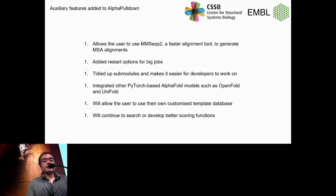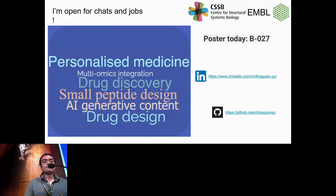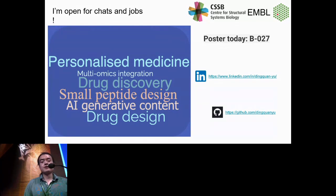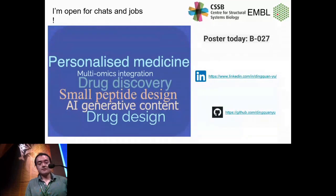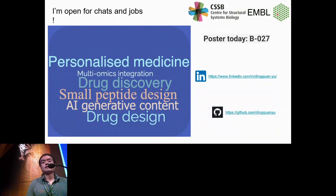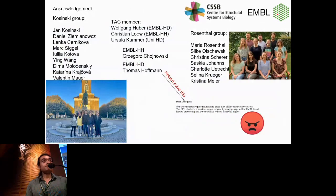There are other auxiliary updates — please visit our GitHub. As I'm approaching the end of my PhD, I'm open for collaborations and also looking for jobs. AlphaPulldown is just part of my PhD project; I've also done multi-omics data analysis and built neural networks on EMBL's GPU clusters. I'm interested in applying AI in drug discovery and small peptide design, including AI-generative content in drug design. Feel free to reach me at the poster or check out my LinkedIn or GitHub. Thank you for listening!